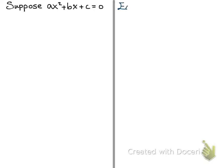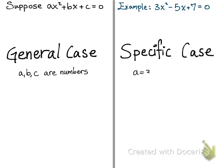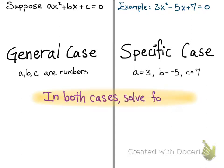To start, we suppose that ax squared plus bx plus c equals 0. For the specific example, we'll let 3x squared minus 5x plus 7 equal 0. You can see on the left we have the general case, and on the right we have a specific case. In both cases, we're going to solve for x, doing both cases together — starting with the specific case to help understand what's going on in the general case.